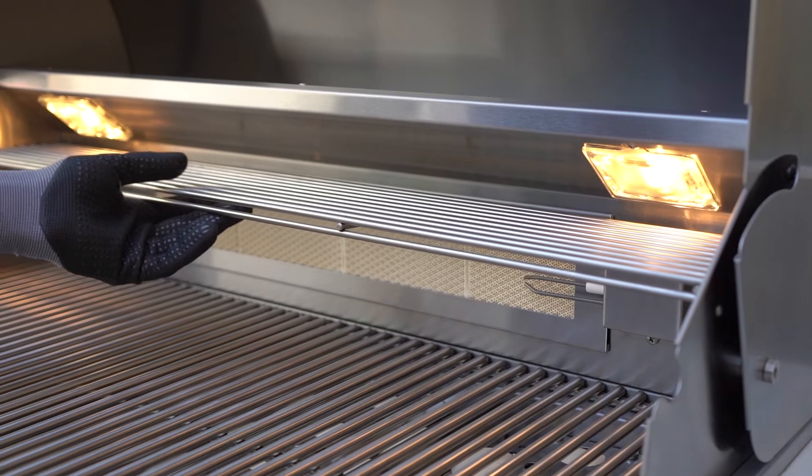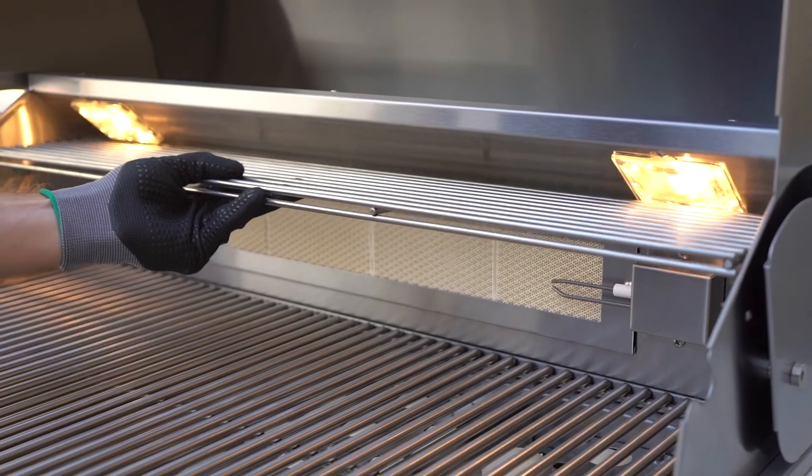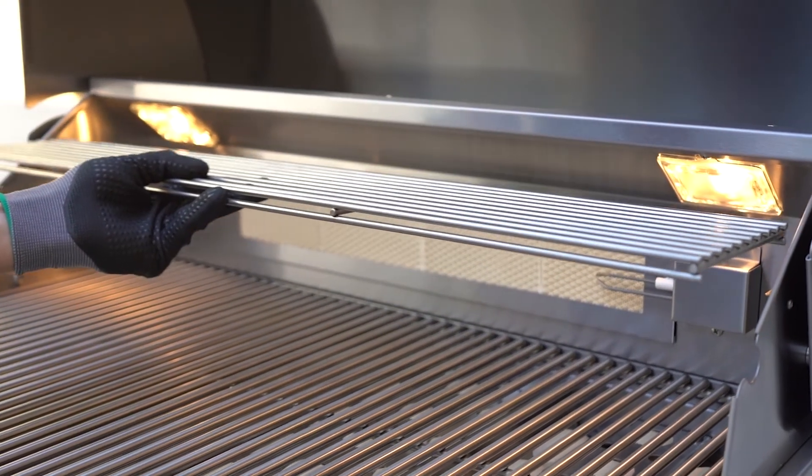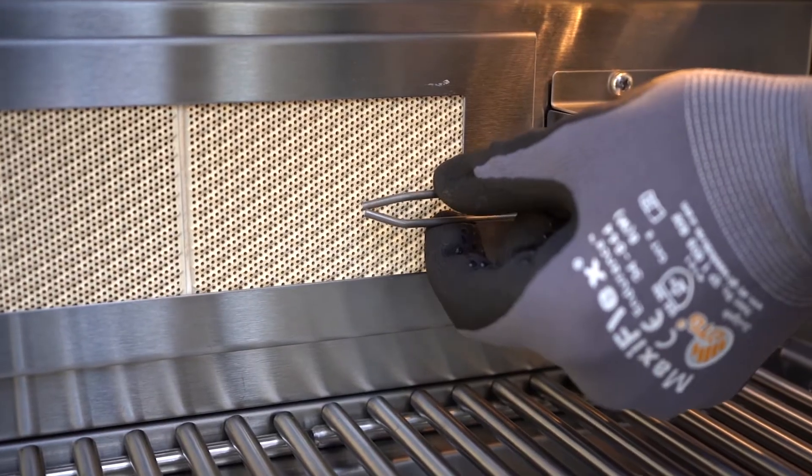To use your rear burner, first make sure the grill is cool and remove your warming rack. Ensure the two igniter prongs are close together.